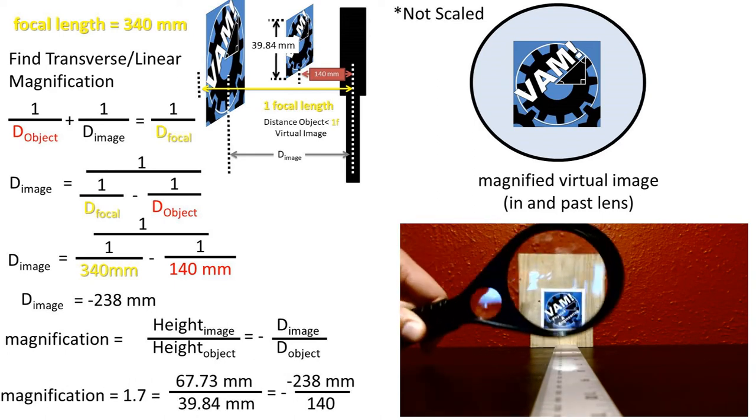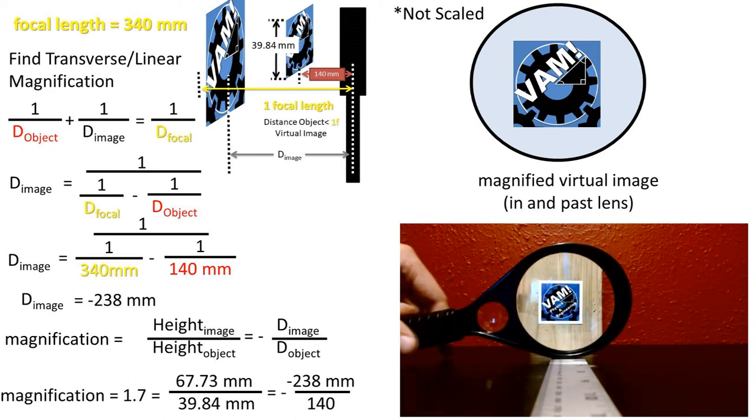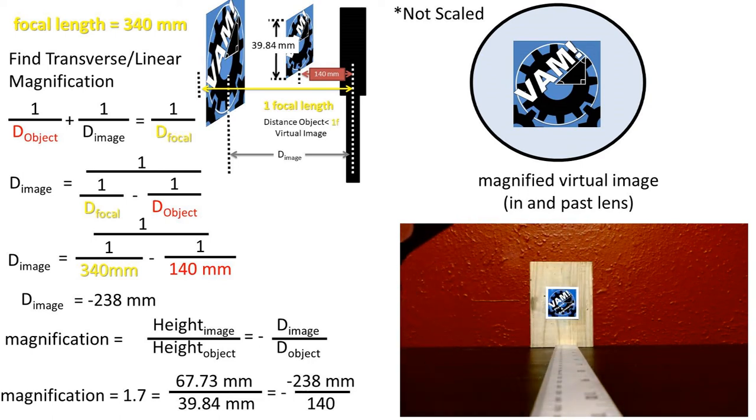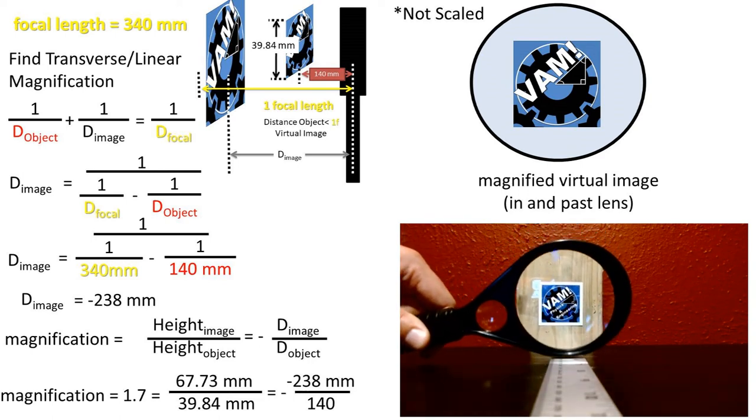Now we can plug in all of our values into the magnification formula, and we get a positive 1.7 for the linear magnification. The positive indicates that it will be an upright image, and not inverted, and it is greater than 1, so the image will be enlarged or magnified.